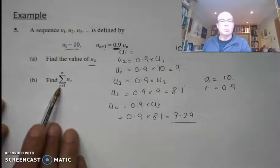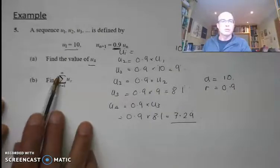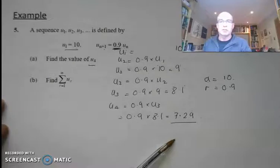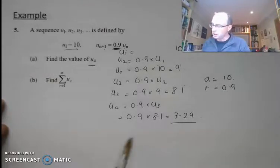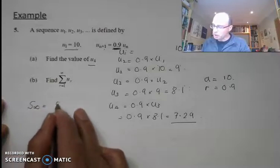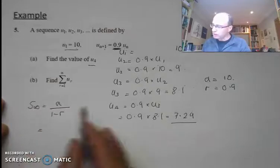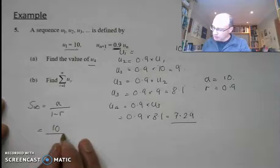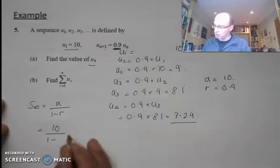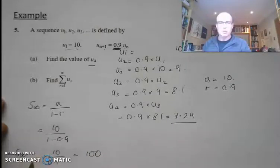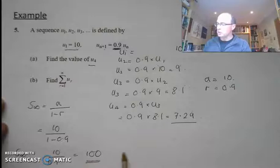So we can then work out part b. We're looking for the sum to infinity of our terms. Our terms are each getting smaller — 8.1, 7.29 — it's a converging sequence, so we can work out the sum to infinity. Remember, sum to infinity equals the starting value divided by 1 minus the common ratio. My starting value a is 10, divided by 1 minus 0.9, which is 0.1. So I've got 10 divided by 0.1, which equals 100. My sum to infinity is 100.